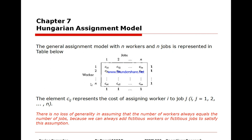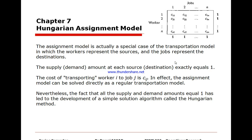In this table we have workers and jobs. You can notice we have the same number of workers assigned to the same number of jobs, and the element i,j corresponding to worker i and job j is how much that job will cost. There is no loss of generality in assuming the number of workers always equals the number of jobs — we can always add a fictitious worker or fictitious job. The assignment model is a transportation model where the number of supply equals the number of destinations, and they are all equal to one. C_ij is the cost of assignment between worker and job.